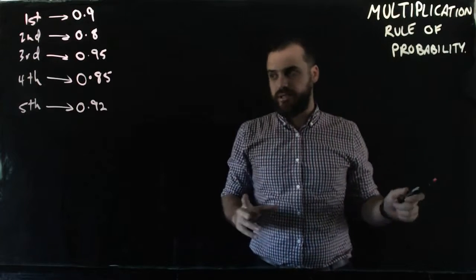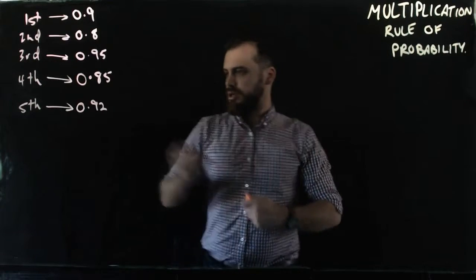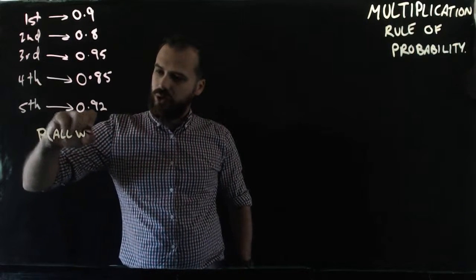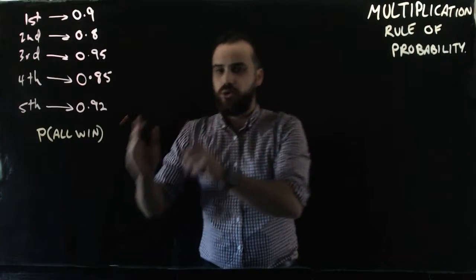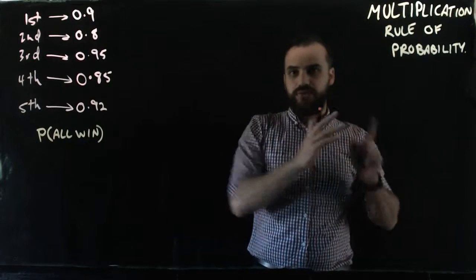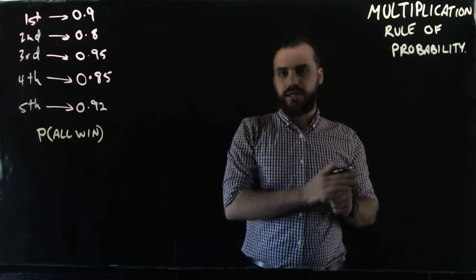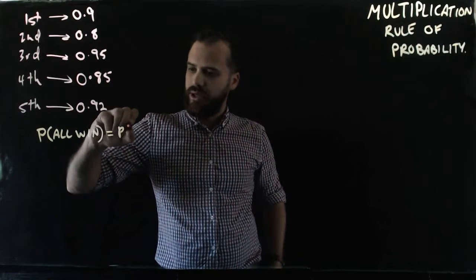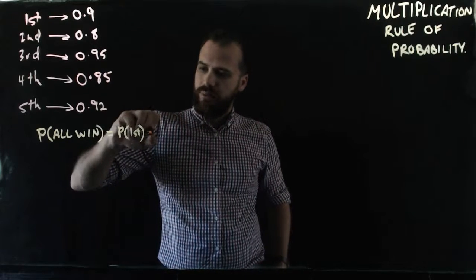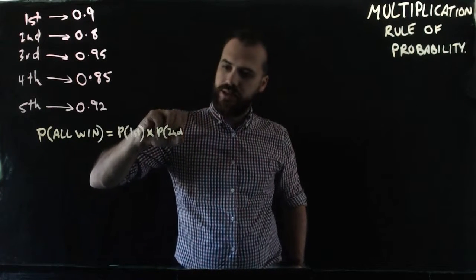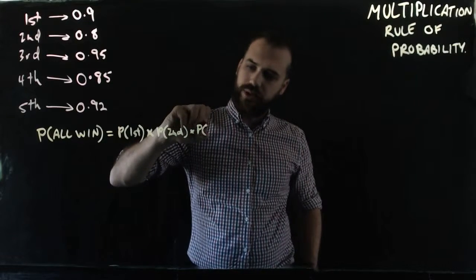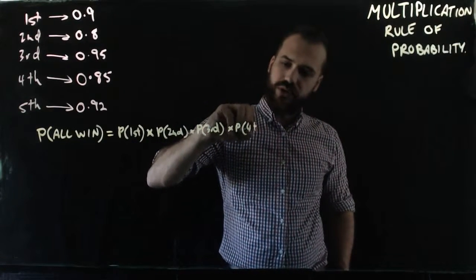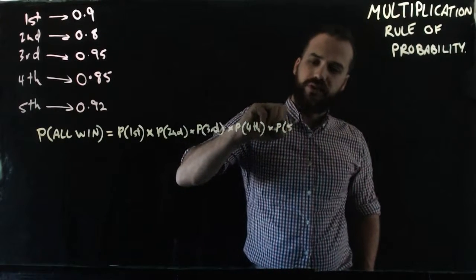The multiplication rule makes that very simple. The probability that they all win is equal to the probability of each of them winning multiplied together. So the probability of all winning equals the probability of the firsts times the probability of the seconds times the probability of the thirds times the probability of the fourths times the probability of the fifths.